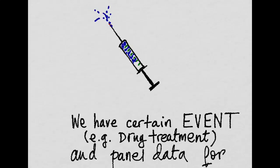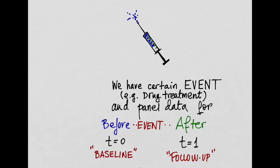Now, imagine that we have a certain event. In our example, this is going to be a drug treatment, a vaccine or something like that. And that we have panel data for several individuals at two different points in time. We have data for before the event — the treatment happens — that's going to be t equals 0, or baseline.